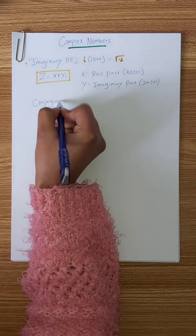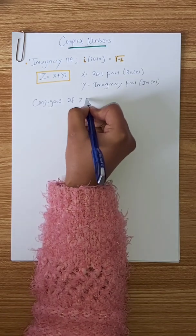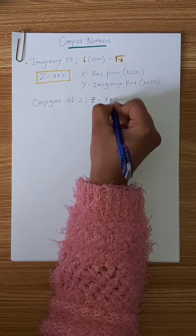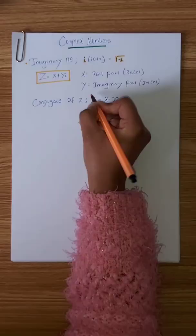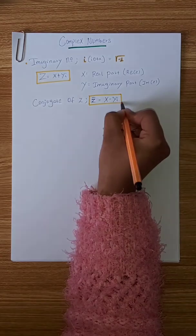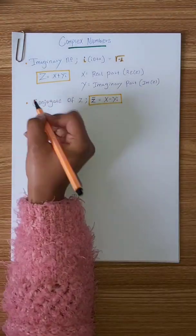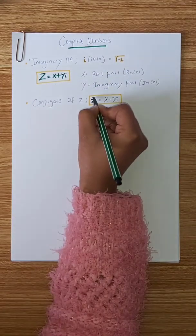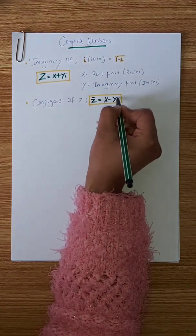The conjugate of z is equal to x minus yi. The imaginary part becomes negative.